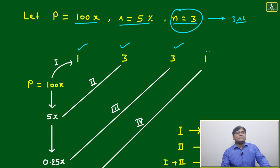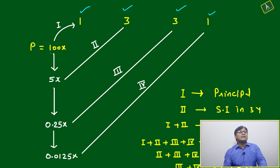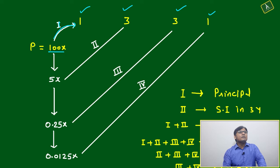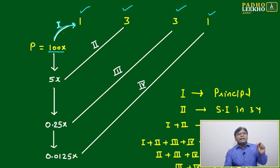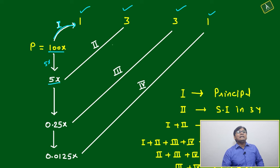Here are the working steps for how to use 1, 3, 3, 1. Your principal amount is 100x. You multiply 100x by 1 — that is your first calculation, Line 1. Then you take 5% interest on 100x, which gives 5x, and multiply it by 3, giving Line 2.